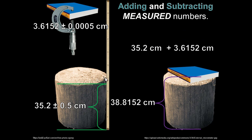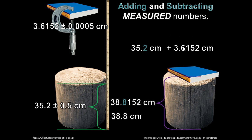Back to the stump and book problem. Of those two measurements, one is very precise and the other is not. We round to the same degree of precision as our lesser precise number — our weakest link. The less precise number has its last digit in the tenths position, so we round our answer to the tenths position: 38.8 centimeters. That's the only correct answer when these are measured, not exact, numbers.